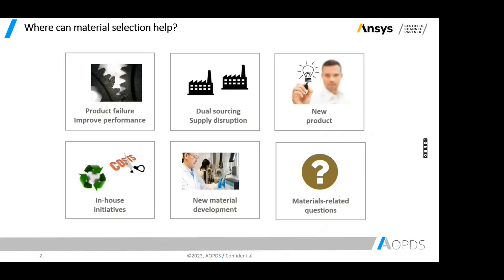There are scenarios where your company decides to pursue initiatives like using more recyclable or sustainably sourced materials — material selection can help in those areas as well. For new products, we never know what the response of our system will be, so choosing material wisely is a crucial part of product development. And obviously, you can always develop your own material.